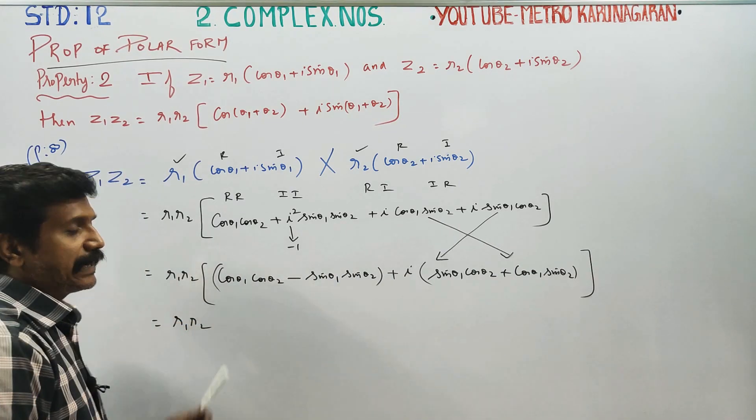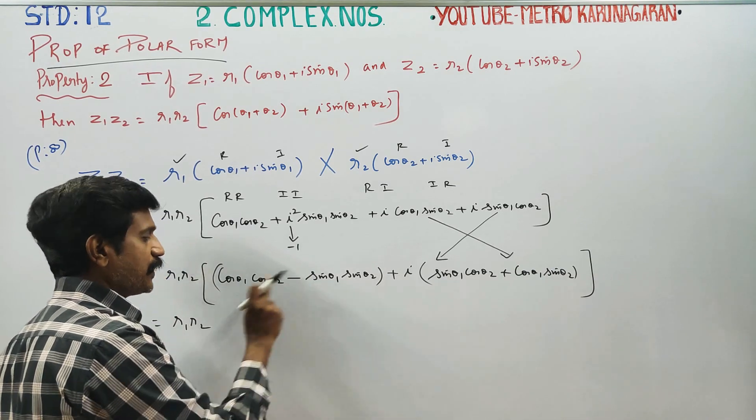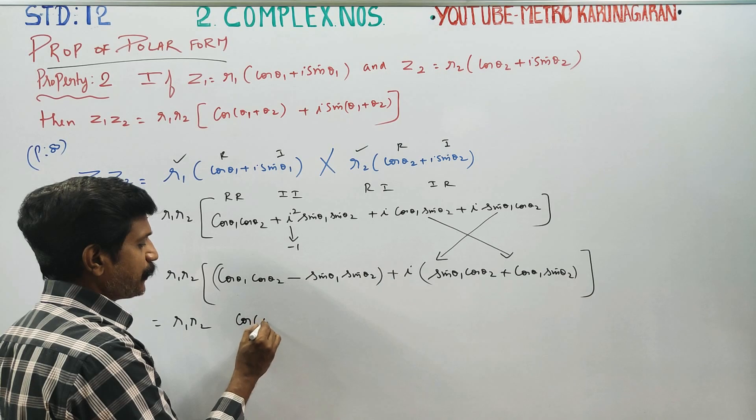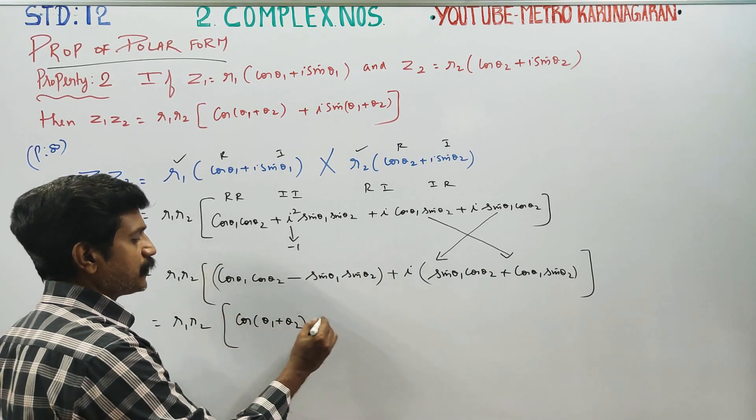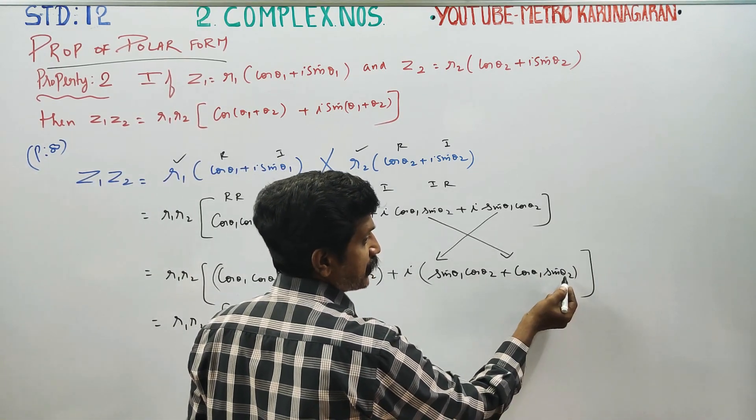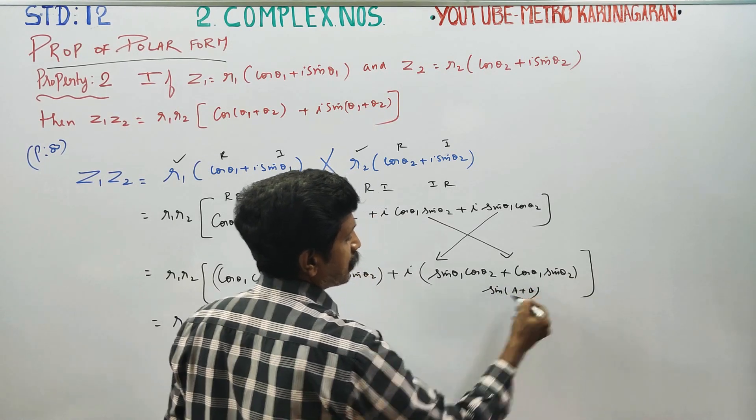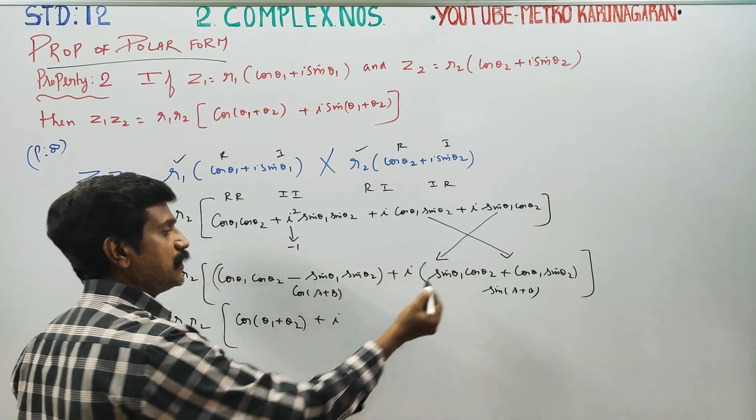R1 R2, using 11th standard formula: cos A cos B minus sin A sin B is cos(A + B). This is the cos(A + B) formula. Plus i times sin A cos B plus cos A sin B, which is sin(A + B). So cos(θ1 + θ2) plus i sin(θ1 + θ2).